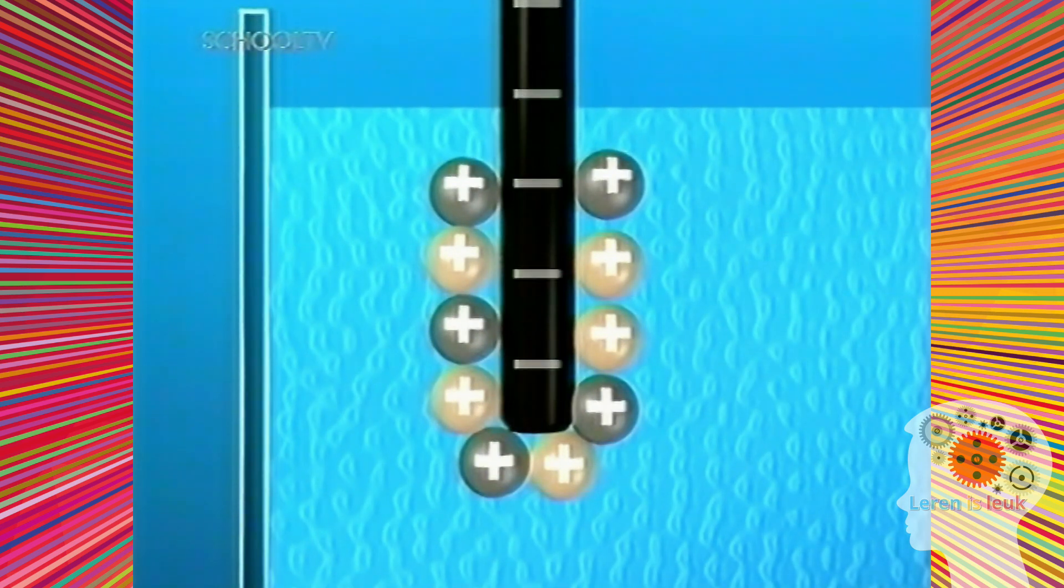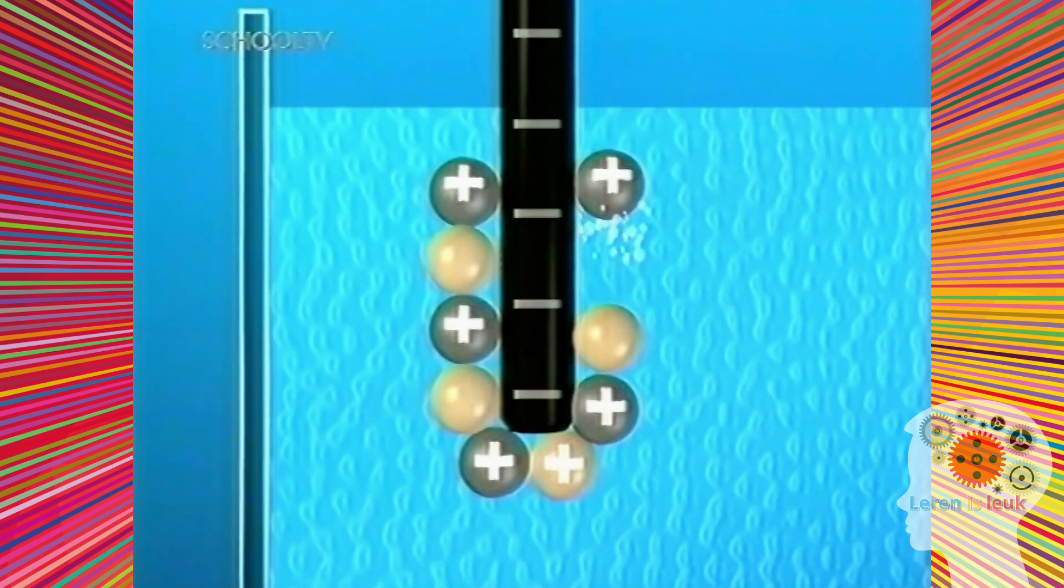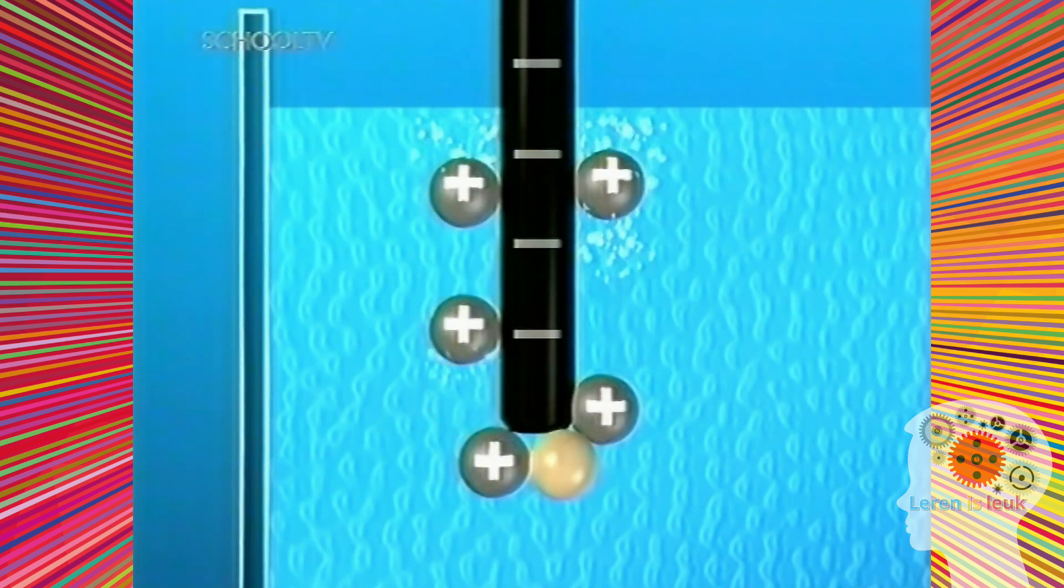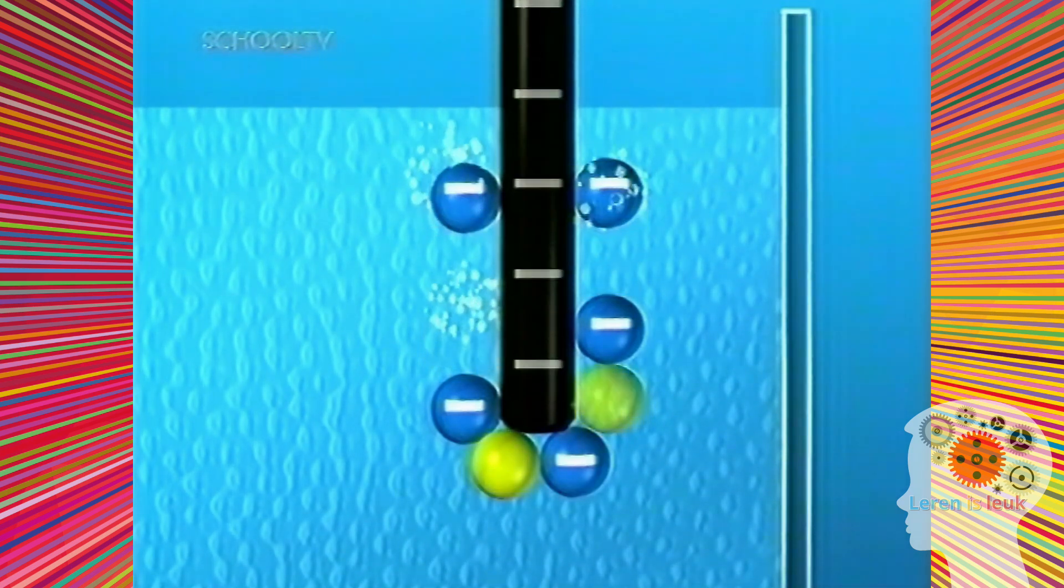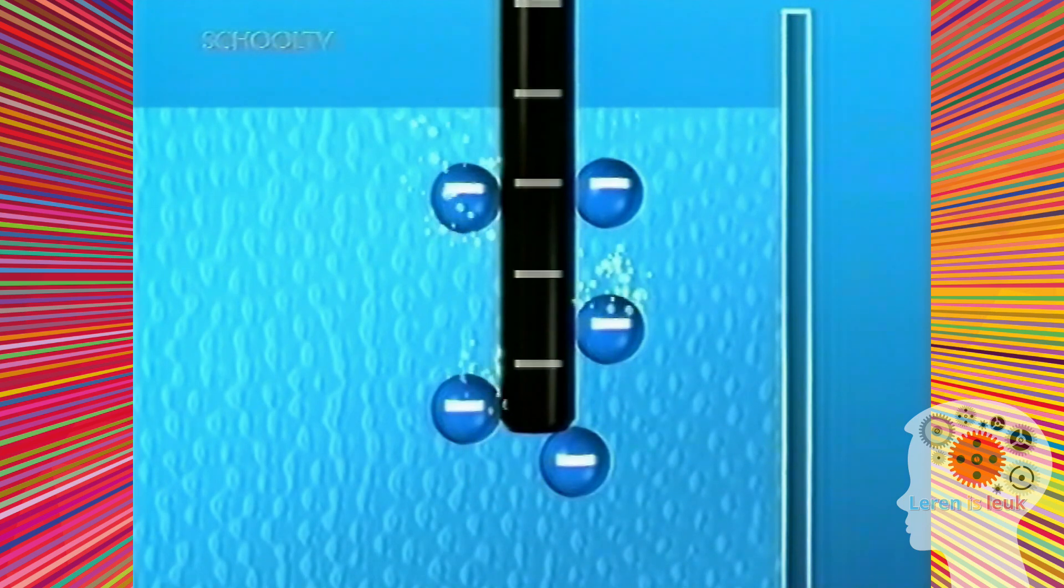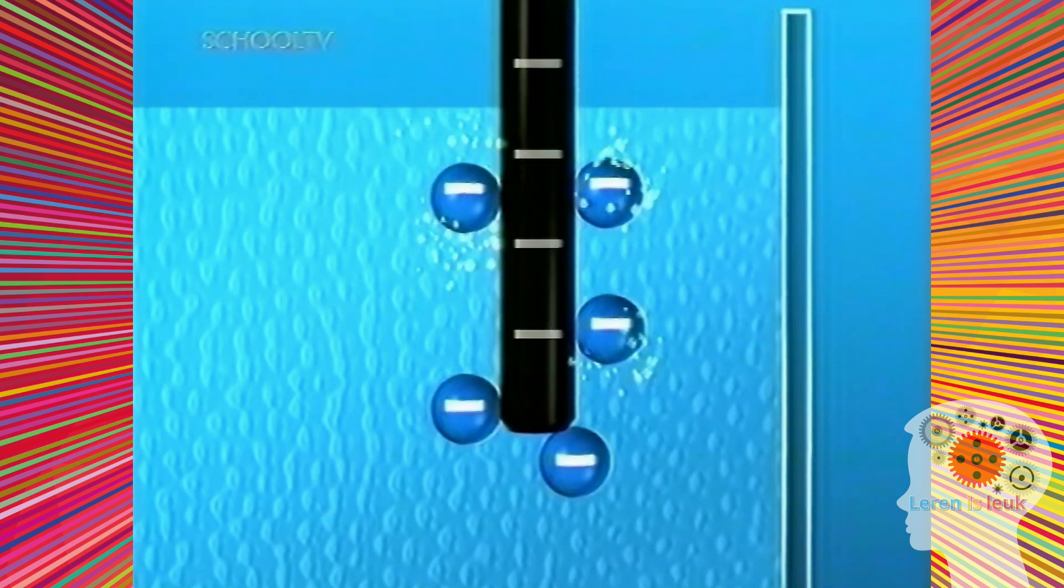Natriumionen en waterstofionen proberen allebei elektronen te krijgen. De waterstofionen winnen het gevecht. Zij raken hun positieve lading kwijt en vormen waterstofgasbellen. Ook bij de positieve elektroden vindt een gevecht plaats. Hier winnen de chloride-ionen het. Zij verliezen hun negatieve lading en vormen chloorgasbellen.